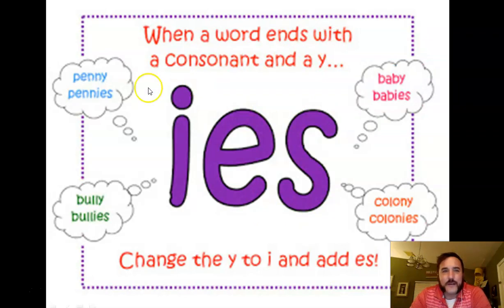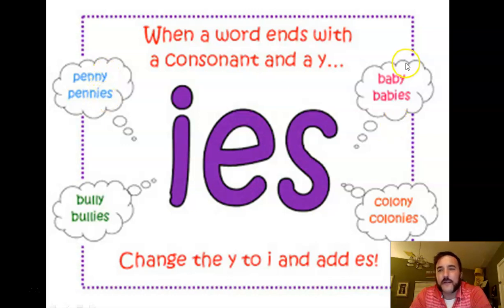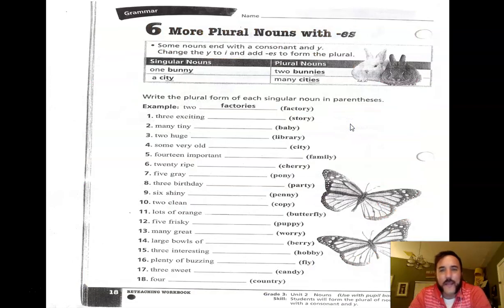This chart is a better example because it shows you the singular word. What we're focusing on is the letter right before the Y. If it's a consonant, like this N here, then you do the rule: change the Y to I and add ES. Here again, baby — just focus on the letter right before the Y. That's a B. That's a consonant. So change the Y to I and add ES. As long as there's a consonant before the Y, that'll always, always, always be the rule.